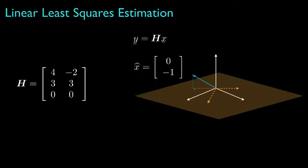And then determine the parameter values that correspond to the point as it projects onto the measurement range. In this case, that would be 0 units of the first column and negative 1 unit of the second column. So our estimate would be 0 and negative 1. This general idea results in an error vector that is orthogonal to the range space for the observation matrix.